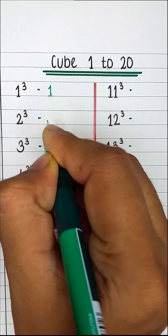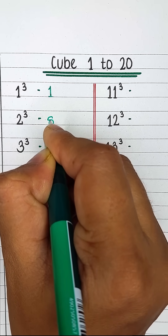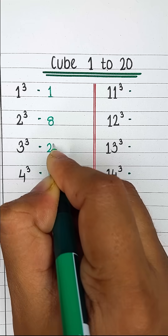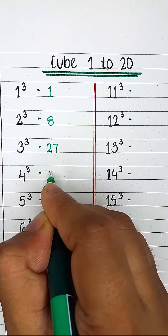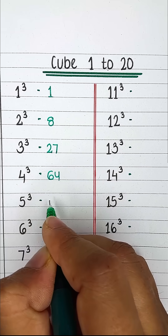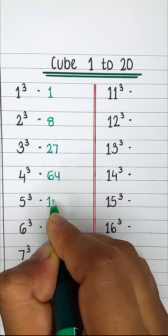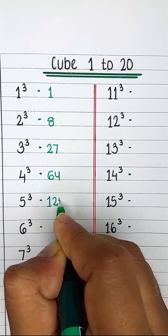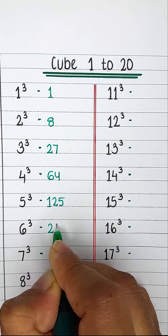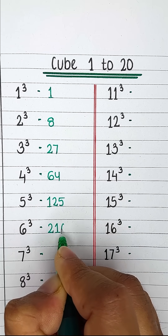Cube of numbers from 1 to 20. Cube of 1 is 1. Cube of 2 is 8. Cube of 3 is 27. Cube of 4 is 64. Cube of 5 is 125.